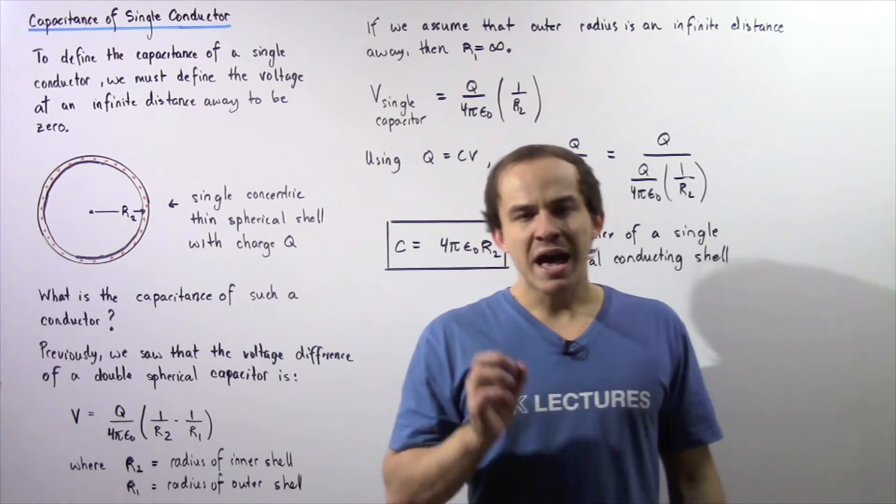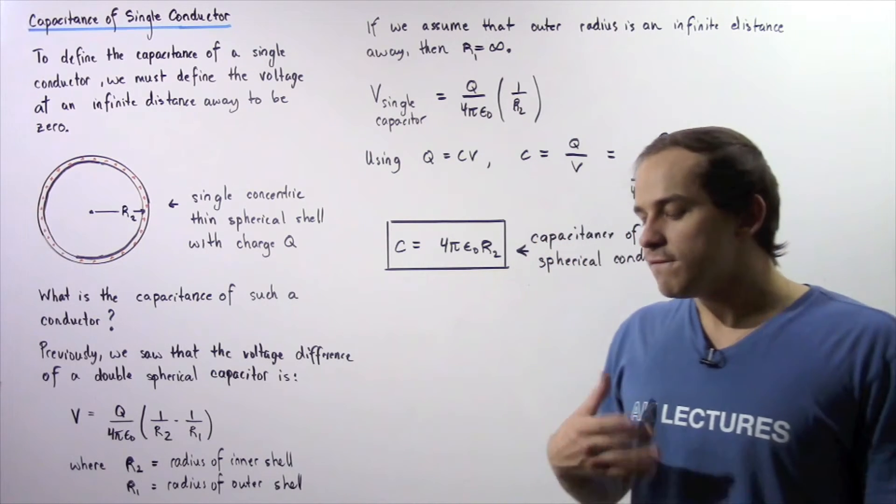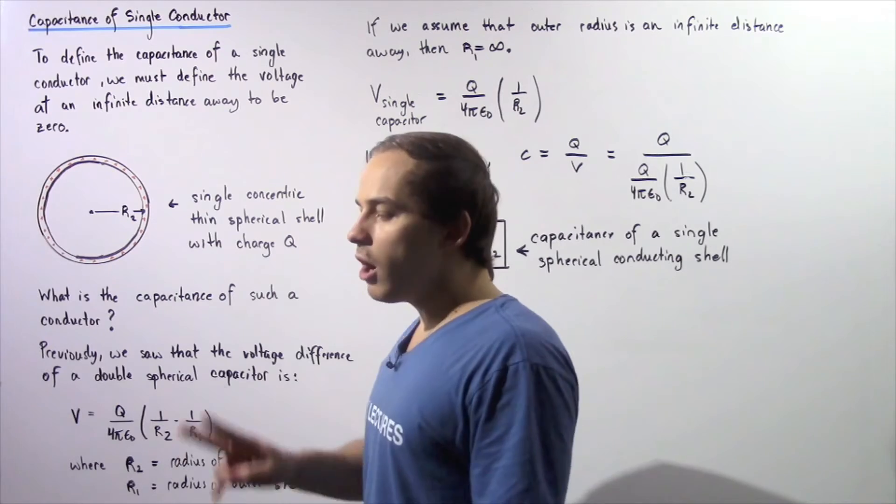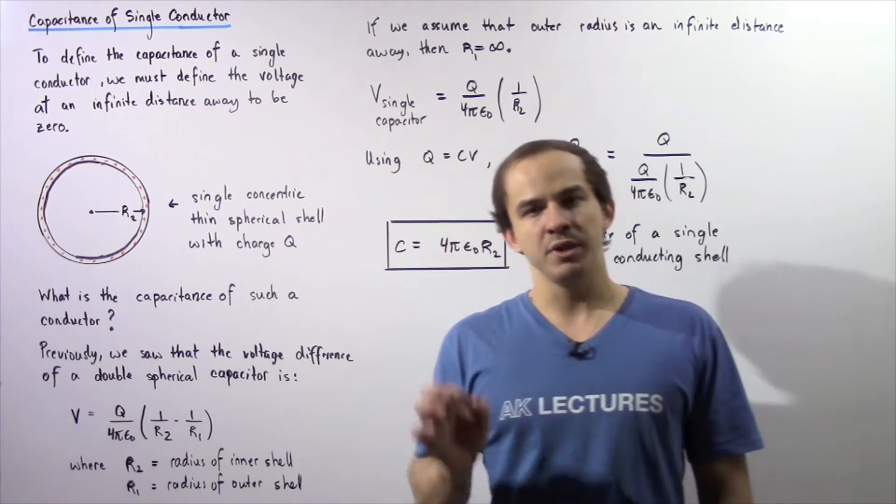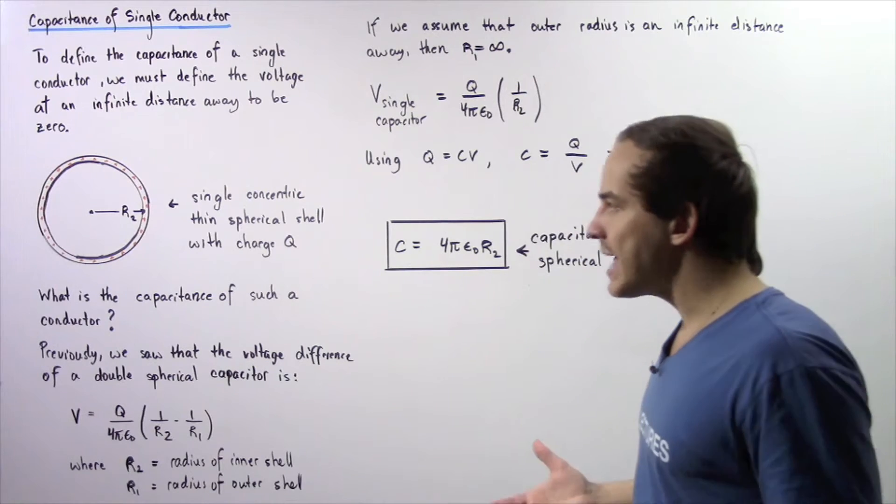Up to this point, we discussed capacitors which consist of two conducting objects. For example, a parallel plate capacitor consists of two parallel conducting plates. So two conducting objects make up a capacitor.